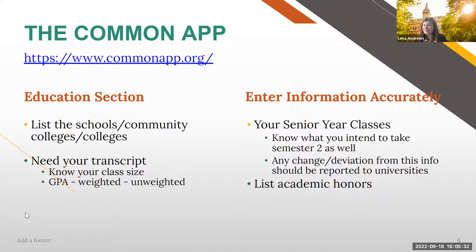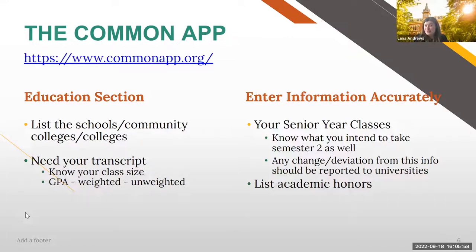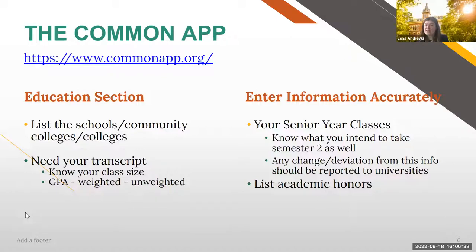As you continue to fill things out, know that for schools that are holistic in their review process — including Vanderbilt — absolutely every piece of the application can provide context and is on the table for holistic schools to use. When I say holistic, I mean schools that use the whole of the application. That is not the most common way to review applications. Many schools use what's called a formulaic process, where it's based on GPA and testing — either minimums for automatic admission or some kind of grid. So these contextual factors are only used at schools with a holistic review process.